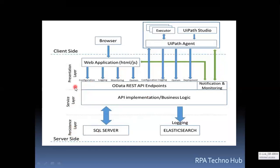This is a typical UiPath architecture — it's a client-server three-tier architecture. The server side is split into three different layers. The presentation layer is where you see the Orchestrator web application user interface, which can be accessed from a browser on the client side. Whatever configurations you do in Orchestrator — like asset creation, queues, and so on — will hit the API endpoints.